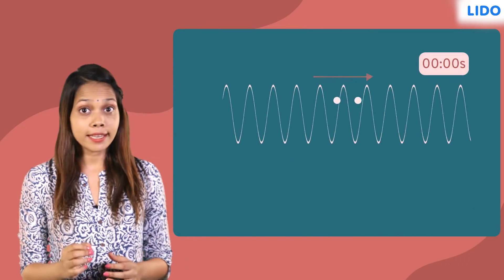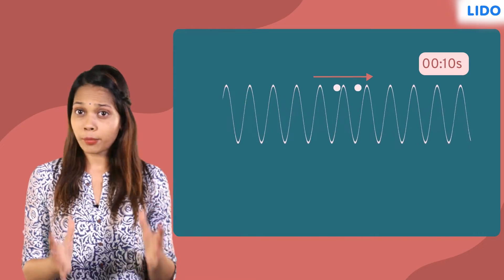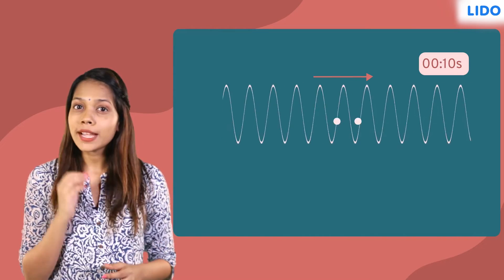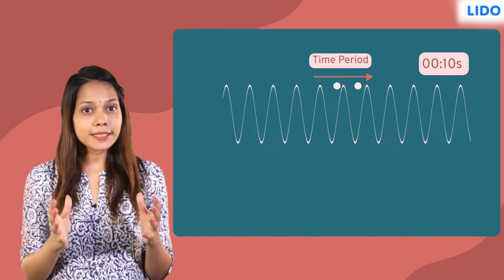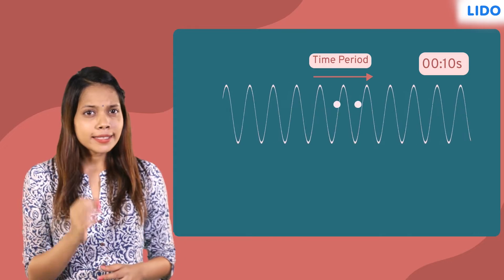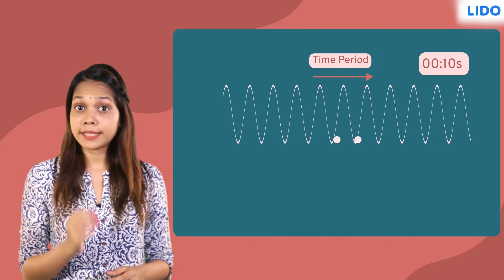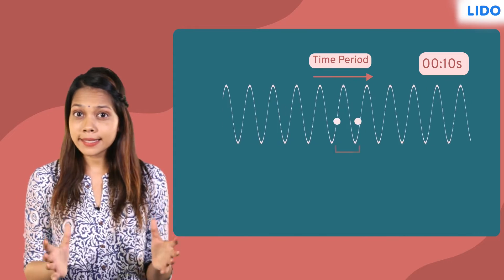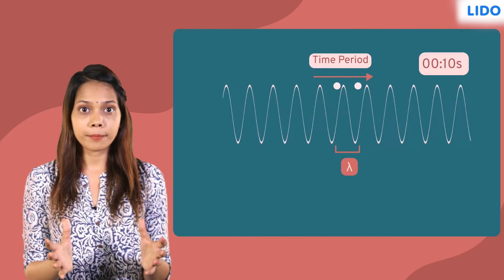The time taken by a wave to complete one vibration is known as its time period. This is measured in seconds. This time period is also the time taken by the wave to cover a distance equal to its wavelength.